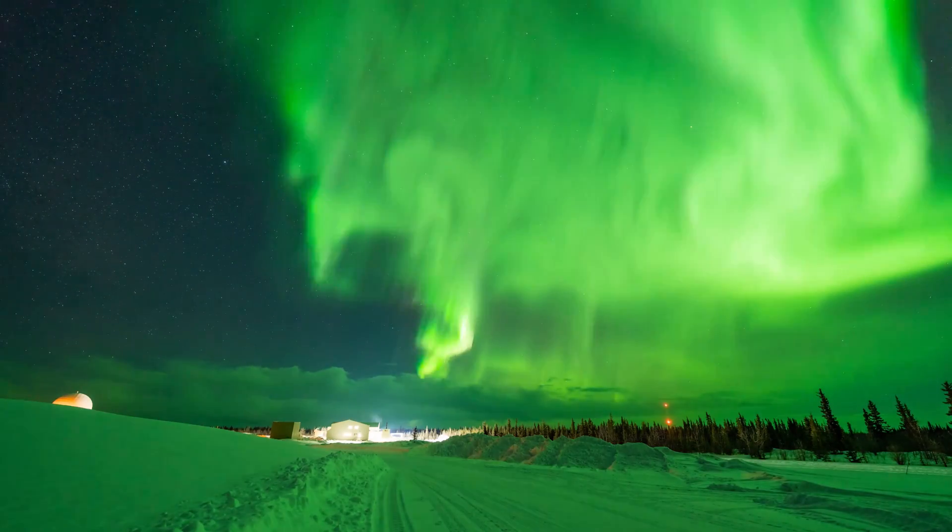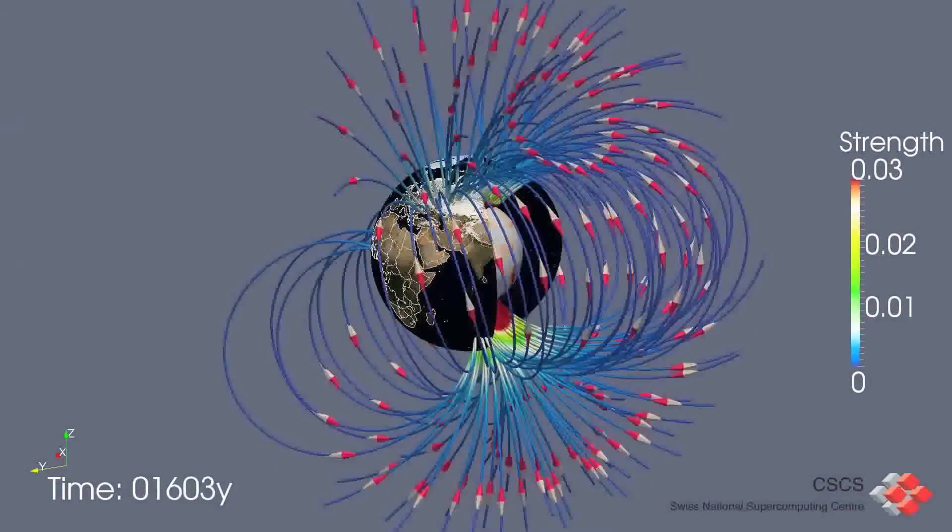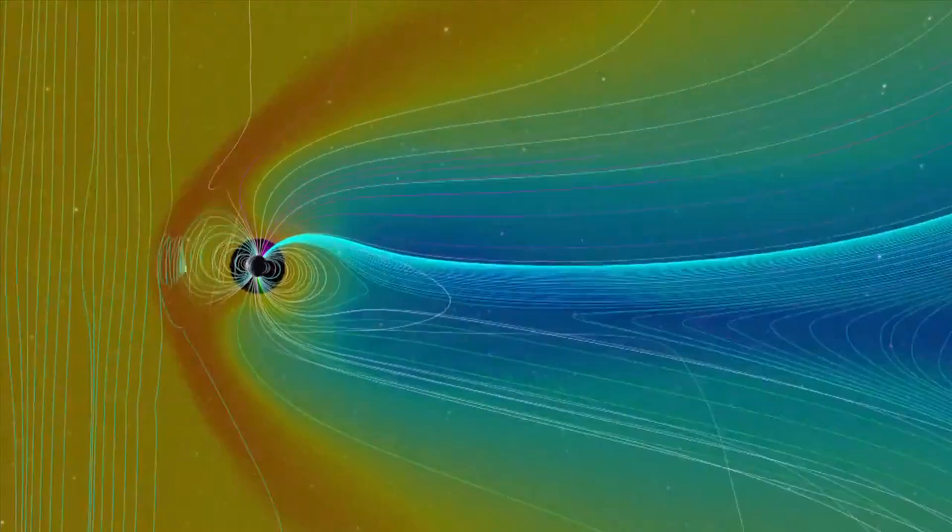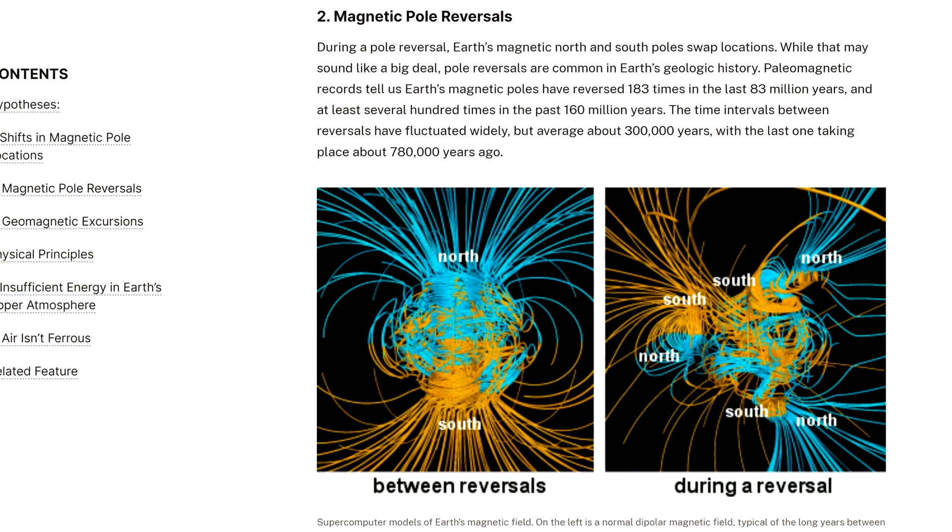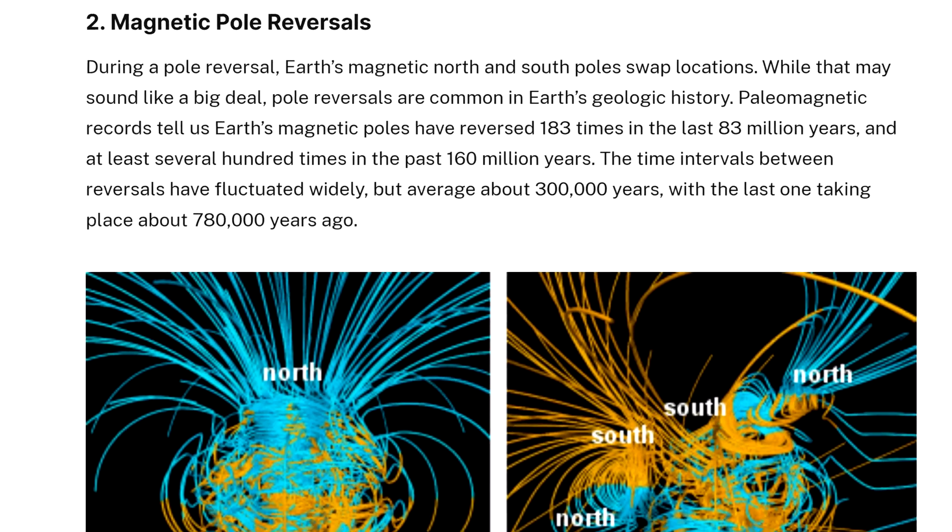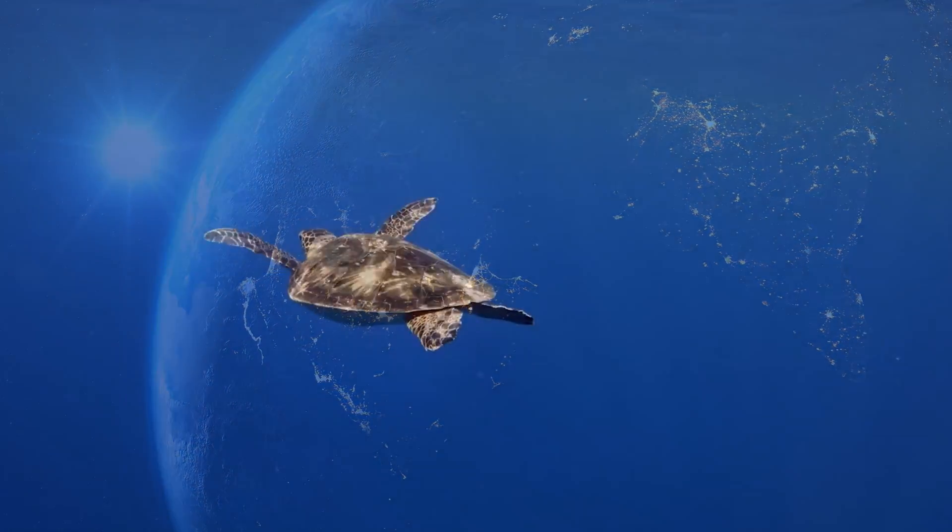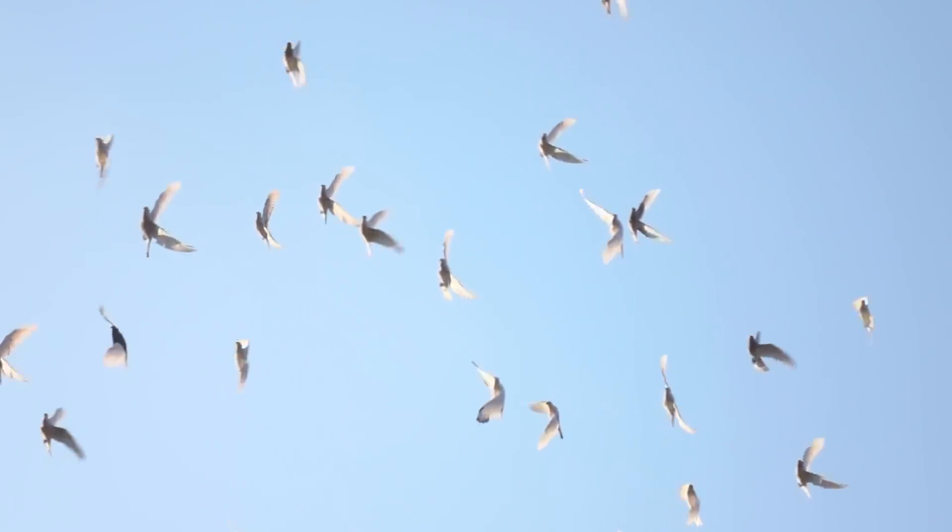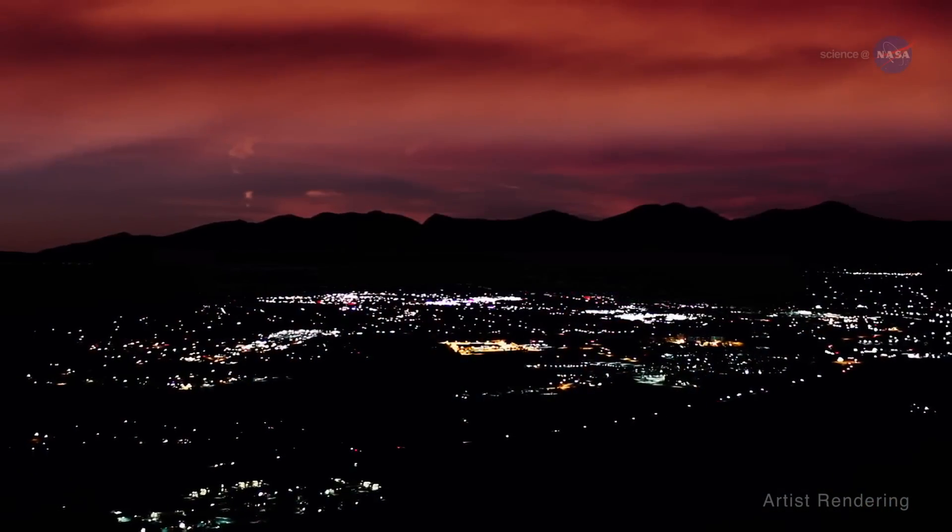Sometime in the future, perhaps the not-so-distant future, Earth's magnetic poles will flip. Throughout the duration of this event, it will cause the magnetic field to weaken temporarily until it settles in its new orientation. So when the next magnetic pole reversal eventually happens, how could it affect the planet and the creatures that live on it? What are the dangers and potential implications for life and technology on Earth? And should we be preparing for this event? Let's get into it.